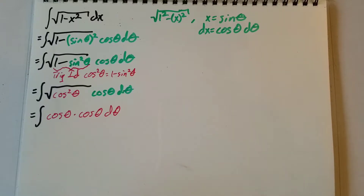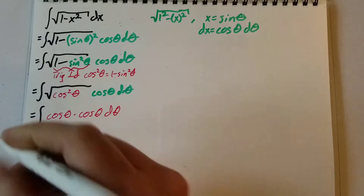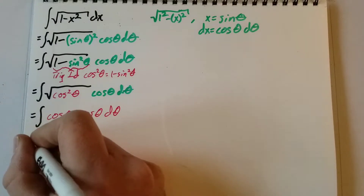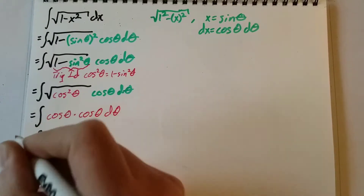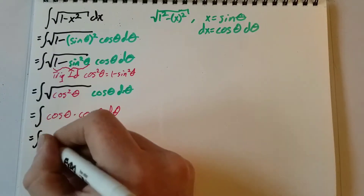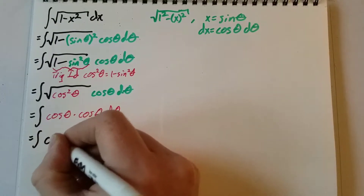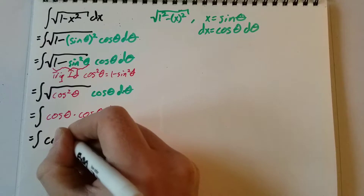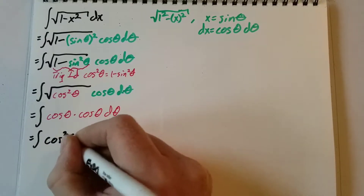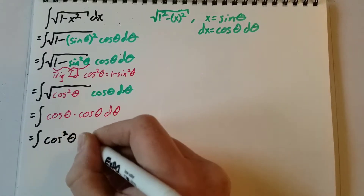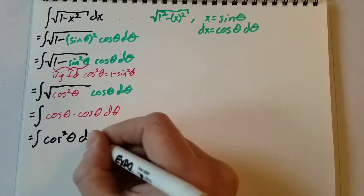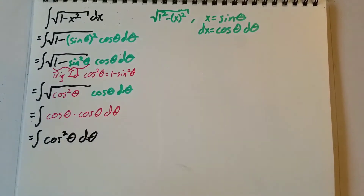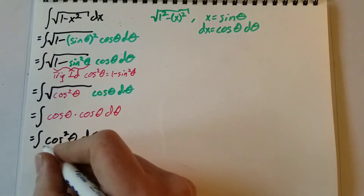Now we can take these two cosines and multiply them together, giving us the integral of cosine squared theta d theta.